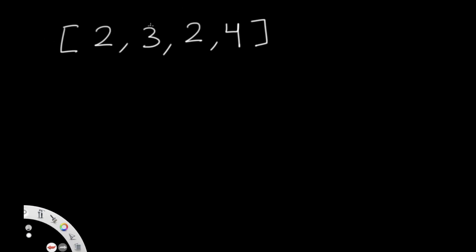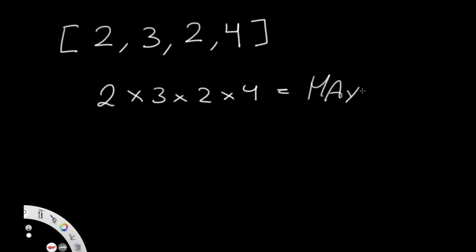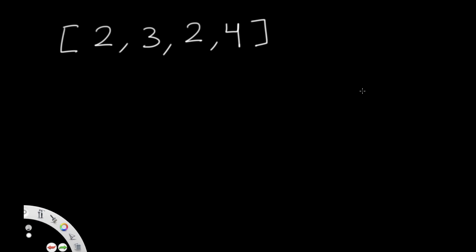Let's consider when we have all positive numbers — say 2, 3, 2, and 4. The maximum product is 2 into 3 into 2 into 4. When you have all positive numbers, multiplying each and every one of them gives you the largest possible product. That's condition one.